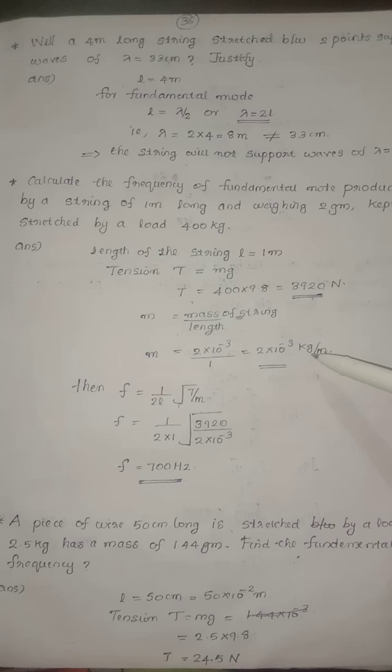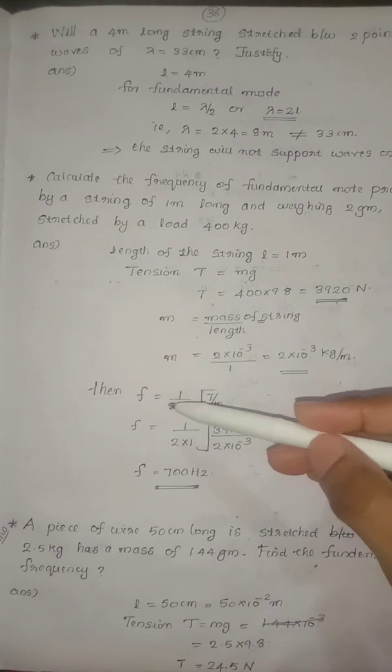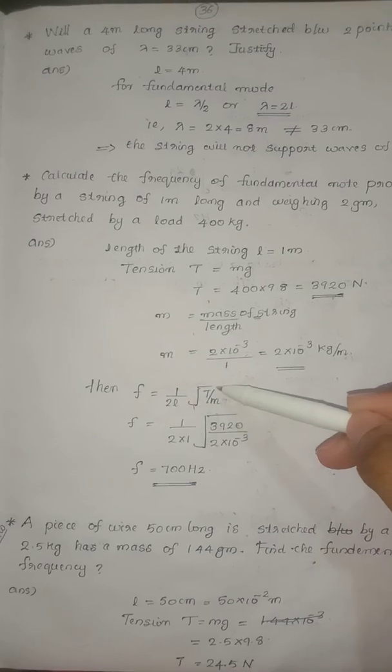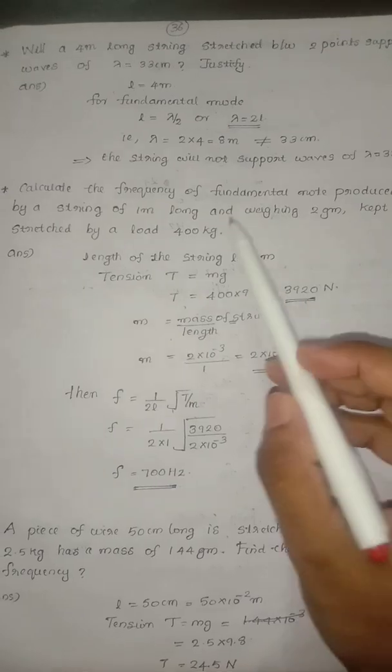So 2×10⁻³g per meter. Then frequency 1/(2L), that means. So the question...